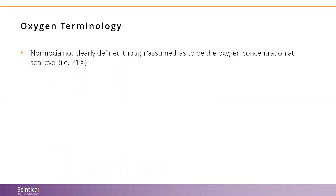There are four terms we should keep in mind as we talk about oxygen in a cellular context. First, when I refer to normoxia, what we are referring to is the air in which we breathe, which is at about 21%. Now, what I need you to understand is when we refer to cellular oxygen, we really want to get away from a human-centric way of thinking and move to a more cell-centric point of view.